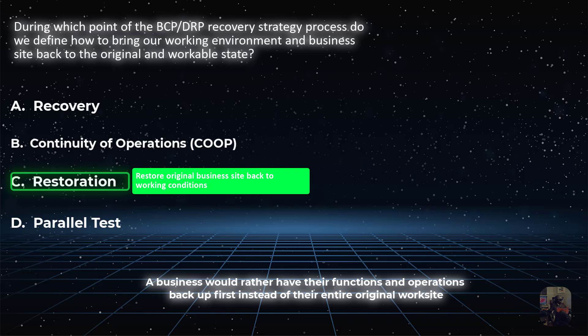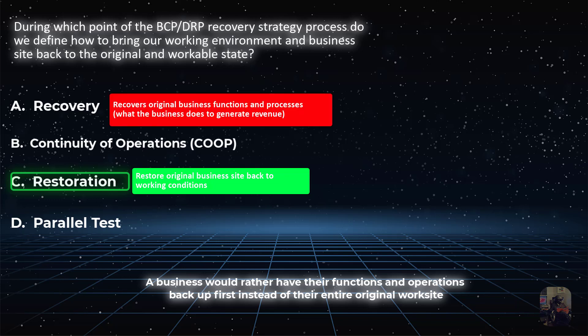For example, if there is an ISP outage at the primary business site, they may send employees home to work as a recovery method. Then, as employees are able to work again, restoration efforts for the ISP may begin.